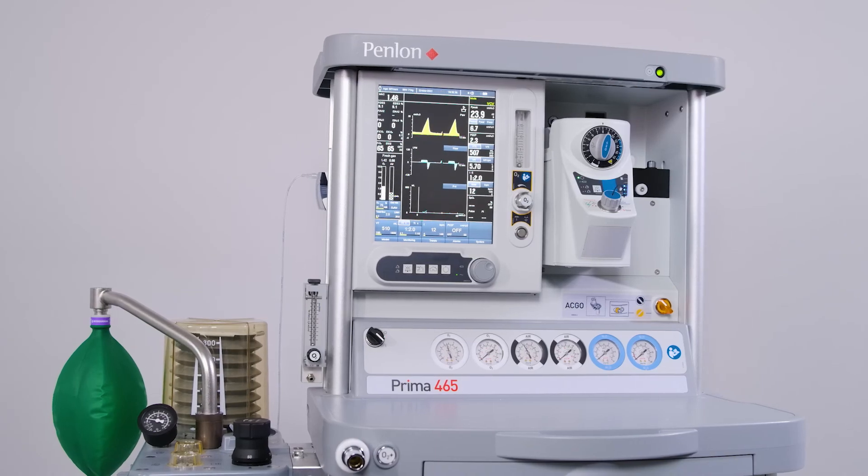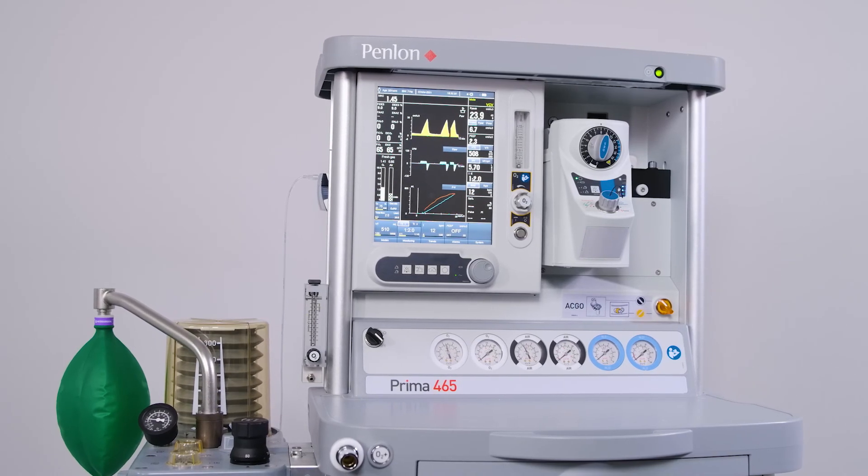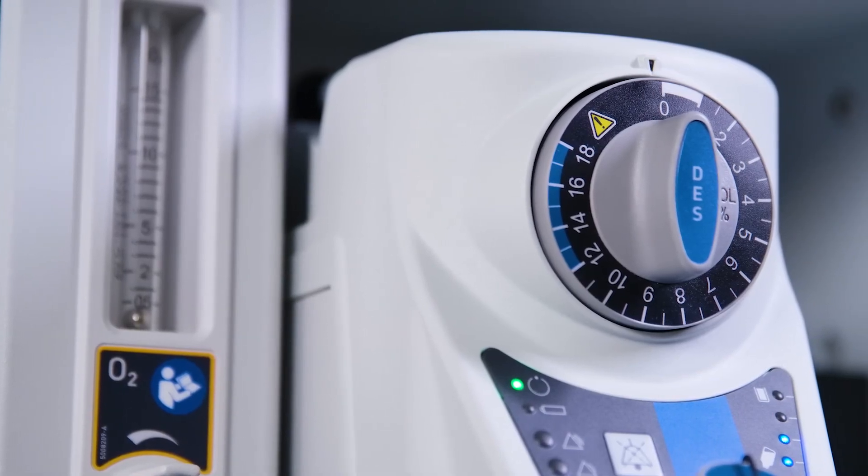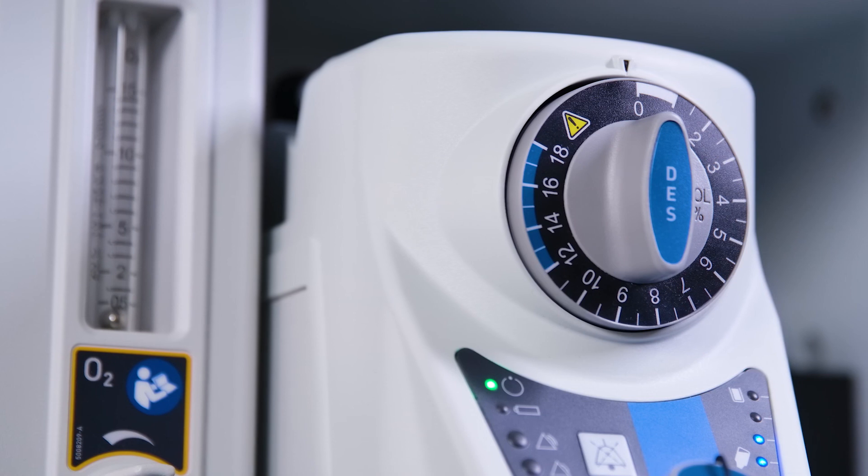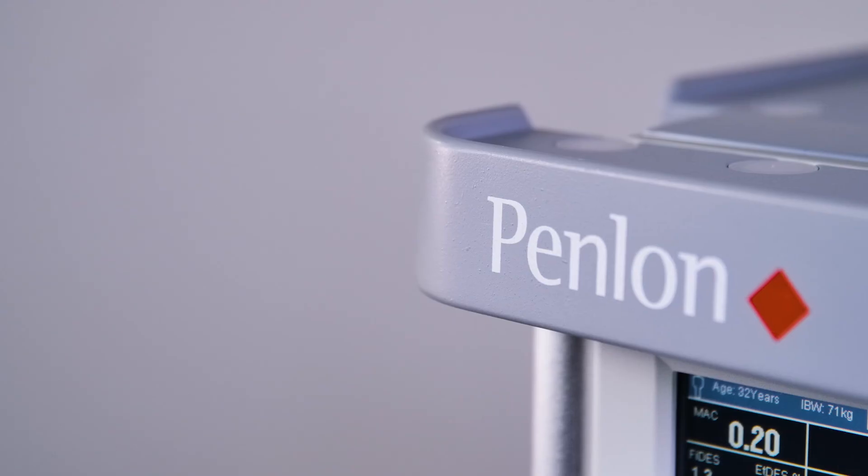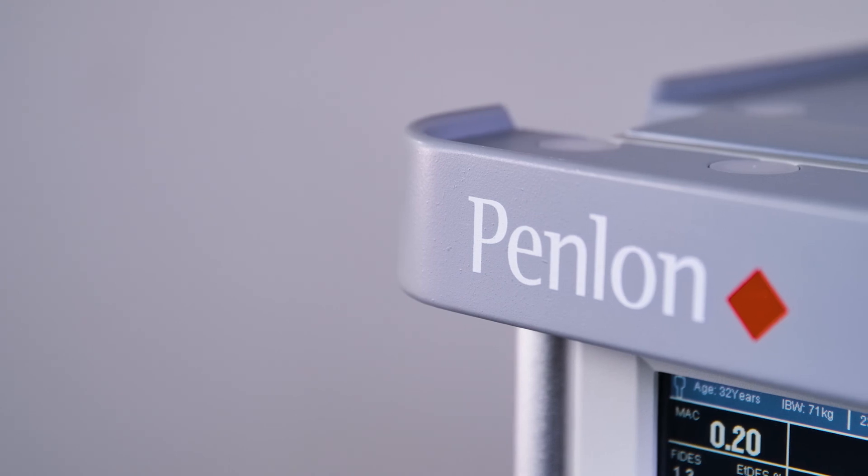Service and Repair: As detailed in the User Manual, operational checks including vaporiser output should be carried out every six months. For details of two-year checks, refer to the Service Manual or contact Penlon Technical Support for further information.